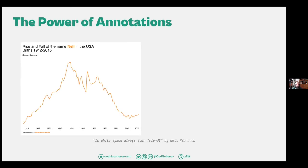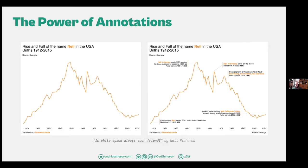I asked Twitter about examples of the power of annotations, and I got this one by Neal Richards — the annotated version about the rise and fall of the name 'Neal' in the USA. You can see the pattern, but you'd ask yourself: why did it peak, why did it peak again, why did it drop? If you add annotations, it gives you a lot of insight into what's going on. Suddenly the graph makes much more sense — it's not just purely information of the rise and fall, but also why.